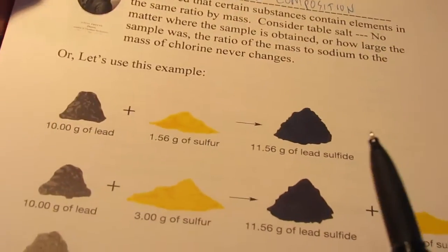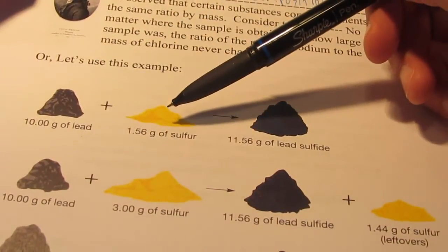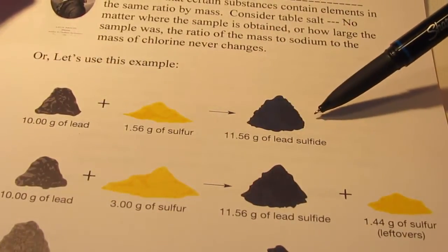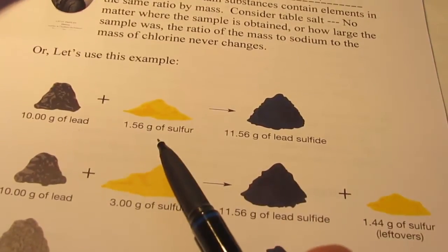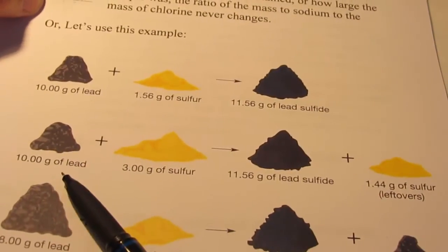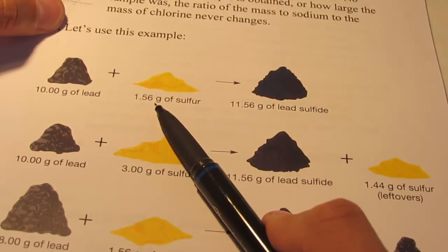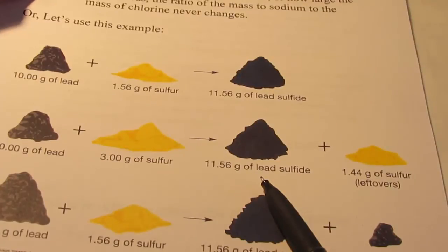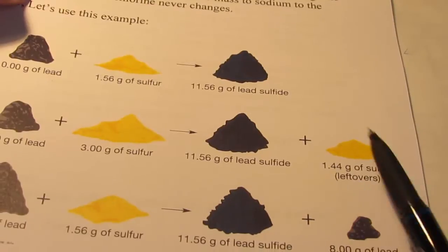Let's use this example. Let's say I had 10 grams of lead and 1.56 grams of sulfur. If I react those in that ratio, I would create 11.56 grams of lead sulfide. So it's a 10 to 1.56 grams ratio would give me that much lead sulfide. Well, what if I had 10 grams of lead and I reacted it with 3 grams of sulfur instead of 1.56? I would still collect 11.56 grams of lead sulfide and I would have 1.44 grams of sulfur remaining. I'd have leftover sulfur.